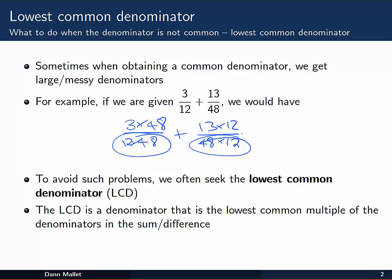When we introduce algebra and variables it gets even worse again. So to avoid such problems we can use what's called the lowest common denominator. That'll allow us to still get a common denominator for our fractions to be added and subtracted, but it won't be as big and messy and hard to deal with. The lowest common denominator is just a denominator that has the lowest common multiple of the denominators in the sum or difference.